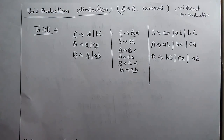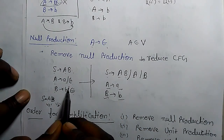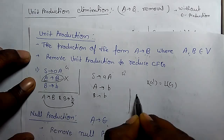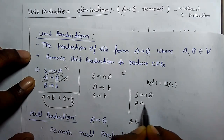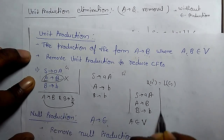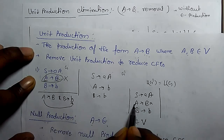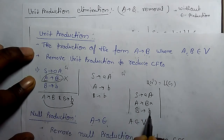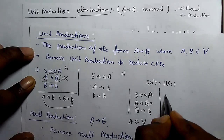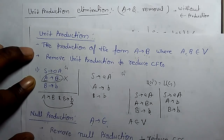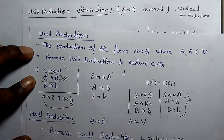Here is a simpler example for unit production. We have: S derives A, A derives a, A derives B and B derives b. We have to remove unit production S derives A and A derives B. For A derives B: A derives B and B derives terminal b, so A directly derives b. This is unit production removal.